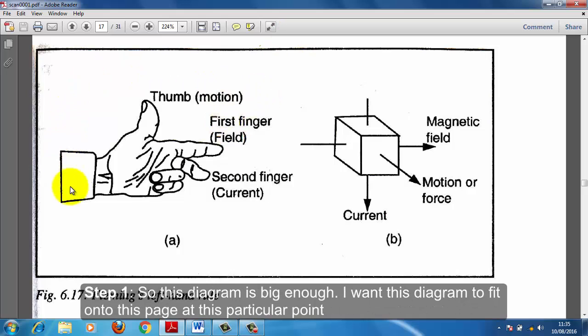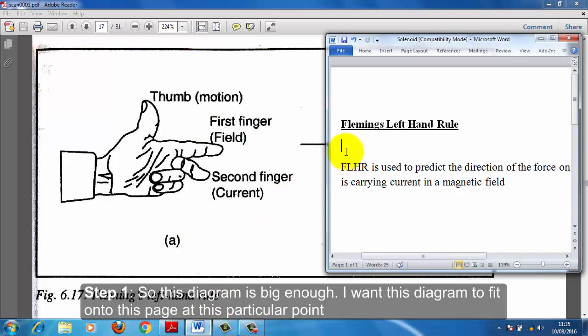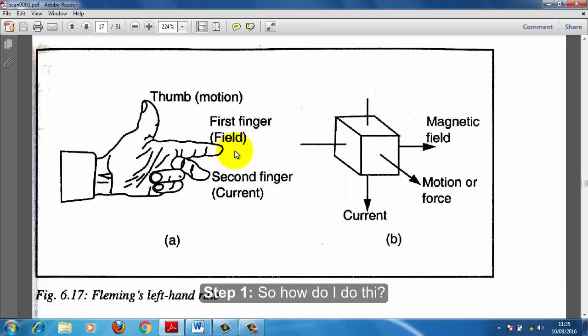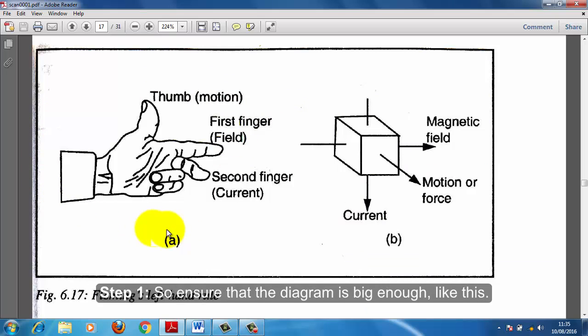So this diagram is big enough. I want this diagram to fit onto this page at this particular point. So how do I do this? I ensure that the diagram is big enough, like this.